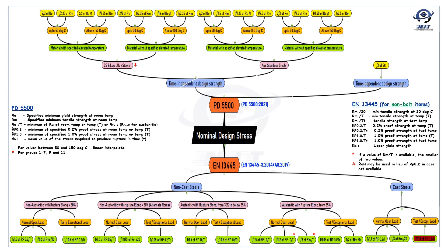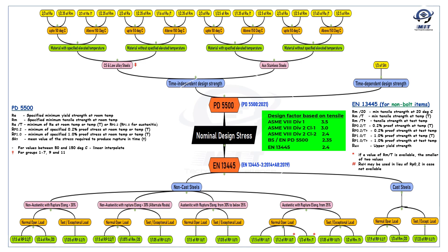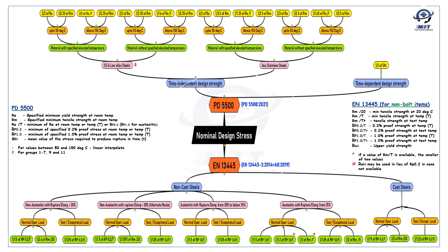An interesting comparison of design factors based on tensile strength: ASME Section 8 Division 1 uses a factor of 3.5, Division 2 Class 1 uses 3.0, and Class 2 uses 2.4. For PD5500, the design factor based on tensile strength is 2.35, and for EN13445 it is 2.4. These values are very close to what is used in ASME Section 8 Division 2. After this slide, some additional notes will be displayed without narration, helpful for this video and the previous code comparison videos.